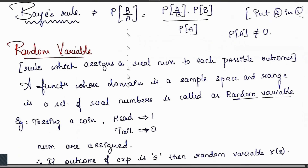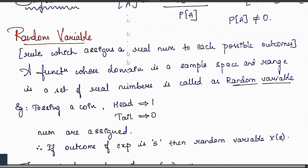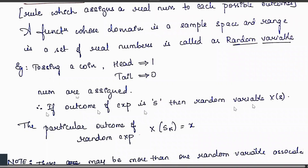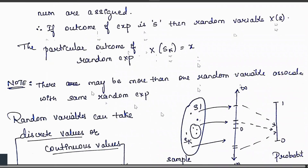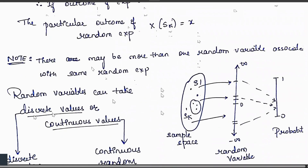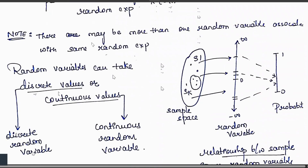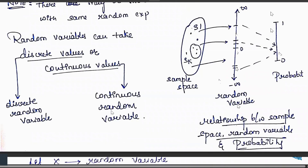Next topic is random variable. It is a rule which assigns a real number to each possible outcome — a function whose domain is a sample space and whose range is a set of real numbers. For example, tossing a coin: head = 1, tail = 0. If the outcome of an experiment is s, then the random variable is X(s); a particular outcome is X(s) = x. There may be more than one random variable associated with the same random experiment. Random variables can take discrete values (discrete random variable) or continuous values (continuous random variable).